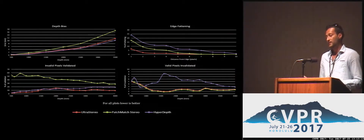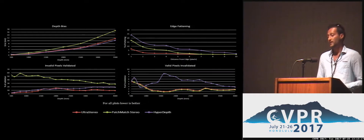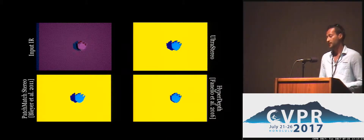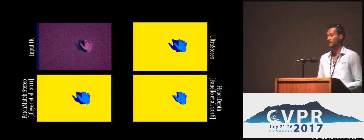Here you can see how Ultra Stereo outperforms the other competitors. We're also able to synthesize non-rigid objects such as hands, which could be useful for tracking applications. Ultra Stereo performs better compared to state-of-the-art not just in terms of depth accuracy, but also in terms of edge fattening and invalidation.